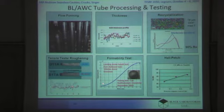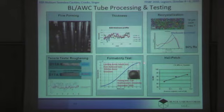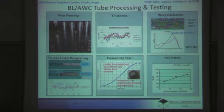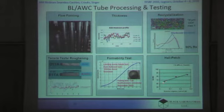Formability testing of this material showed excellent formability up to very near the end of the hemispherical dome test, where we had some localized yielding. One issue, though, with going to a finer grain size is that the strength increases. We had a concern with the thicker wall and the higher strength — the strength of this material was at about 85 MPa versus 65 MPa for the DAISY material.